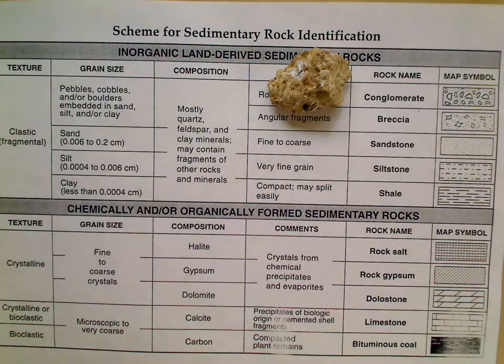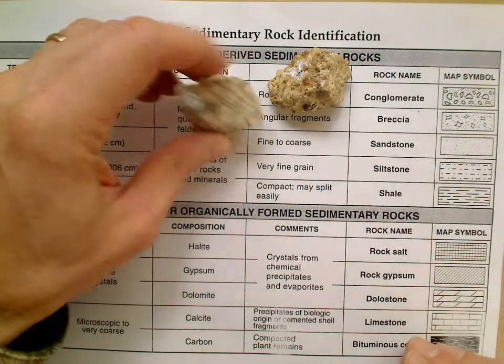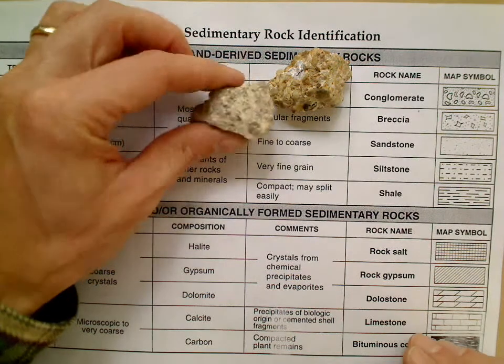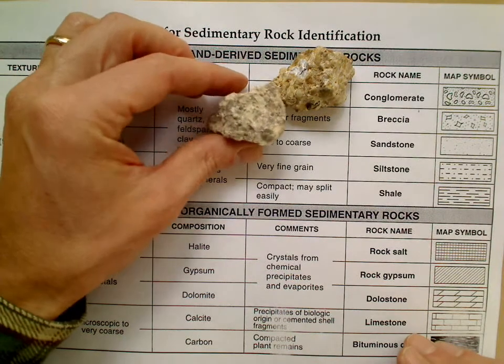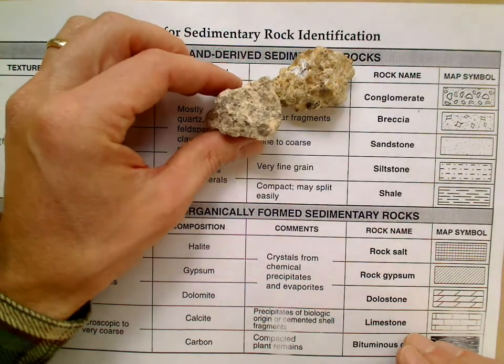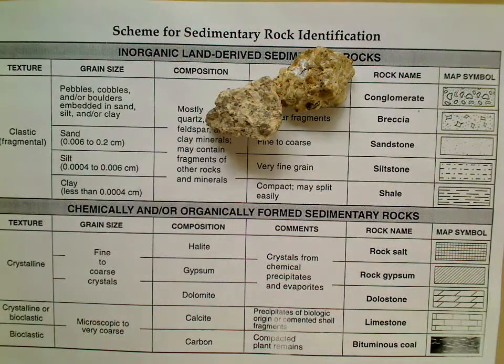Here we have conglomerate, and then breccia — those two are going to be hard to tell apart. And here is sandstone.